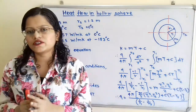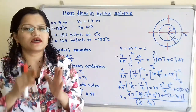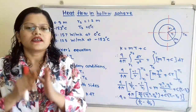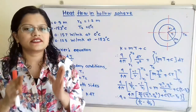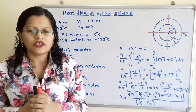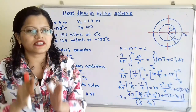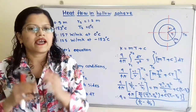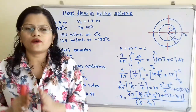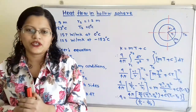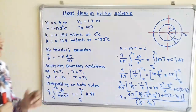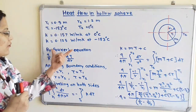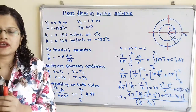For the hollow sphere, heat flow is taking place along the radial direction. We consider the material is homogeneous and steady state conduction is taking place. This is unidirectional steady state conduction without any internal heat generation. To calculate the heat flow we will apply Fourier's equation: Q divided by A equals minus K times dT/dr.